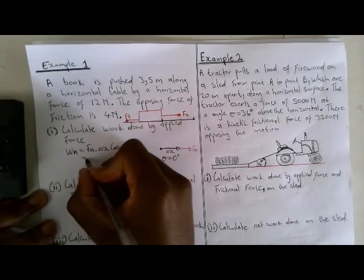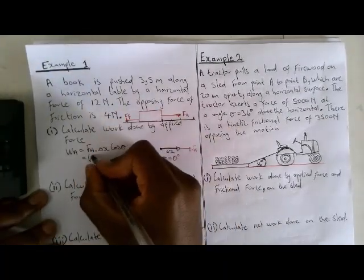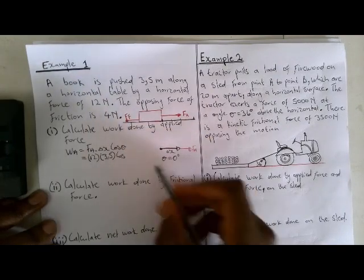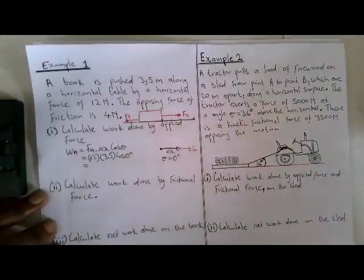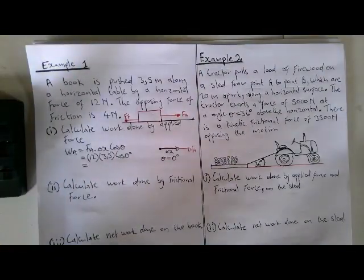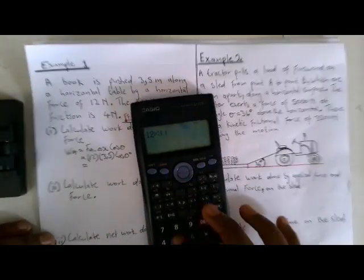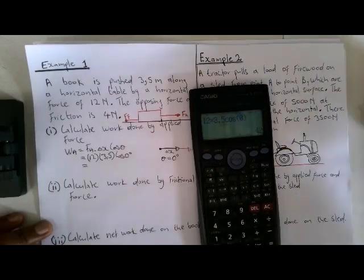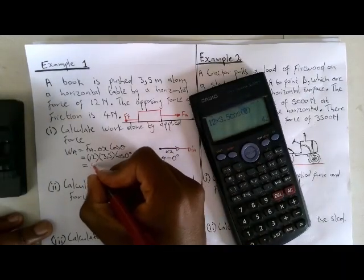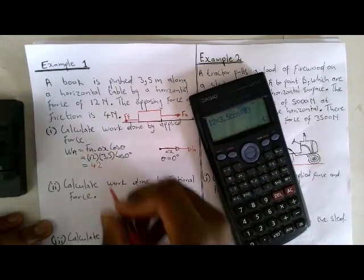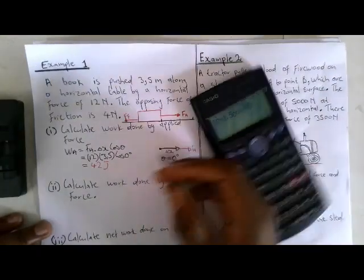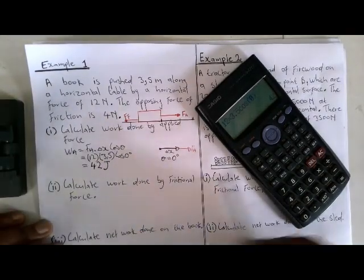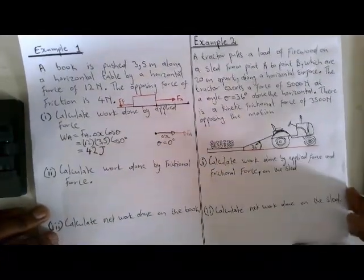Substituting: W = 12 × 3.5 × cos(0°). Since cos(0°) = 1, this gives 12 × 3.5 = 42 Joules. So the work done by the applied force is 42 Joules.